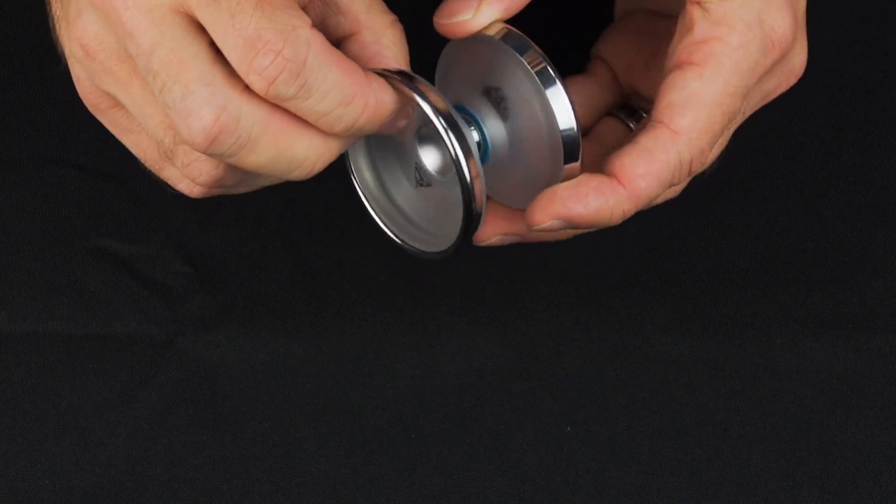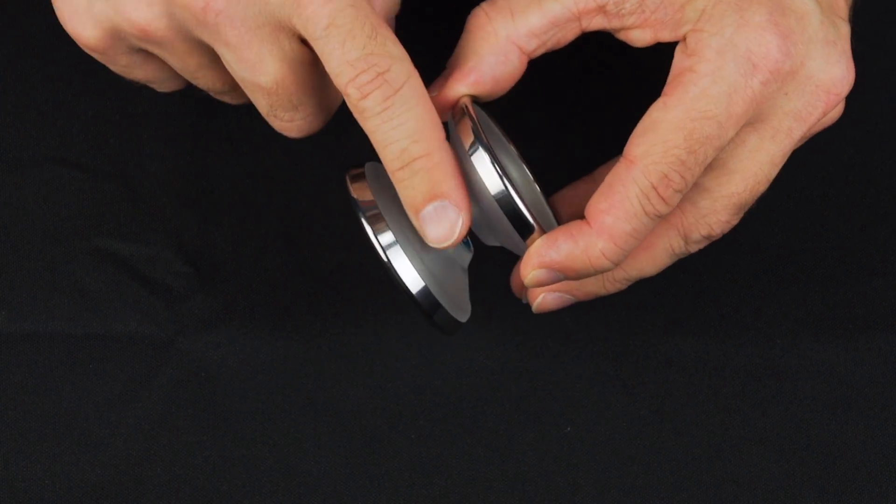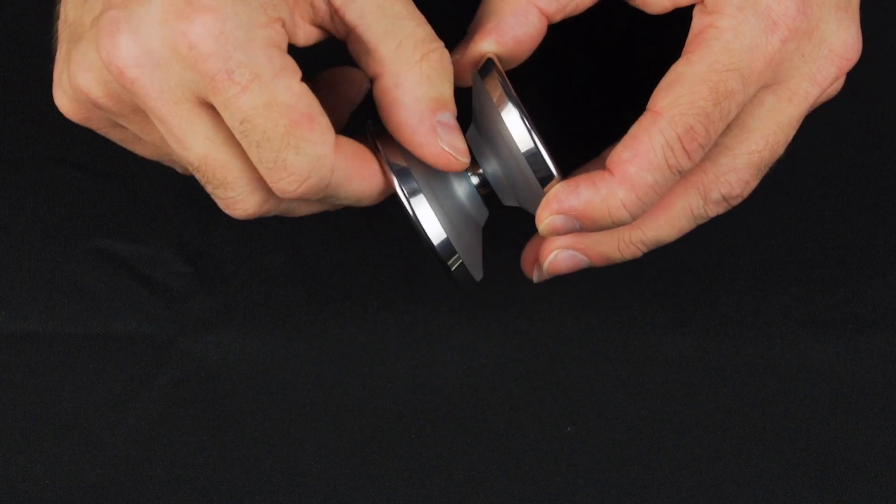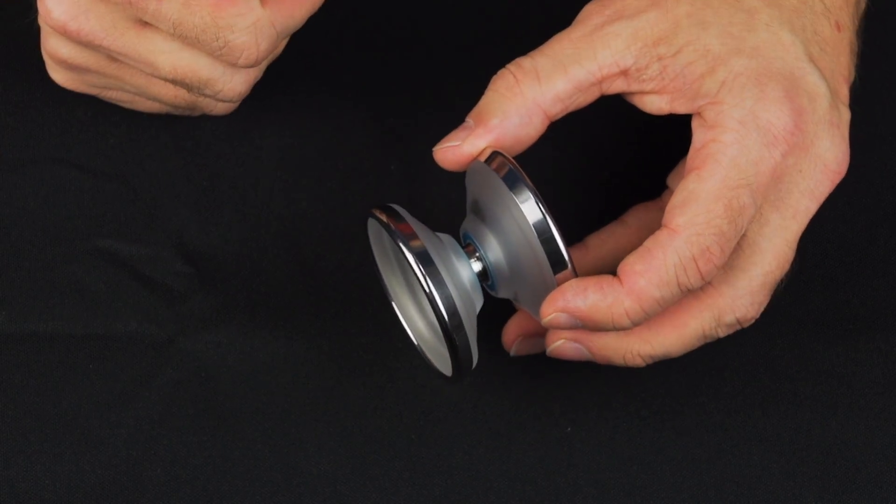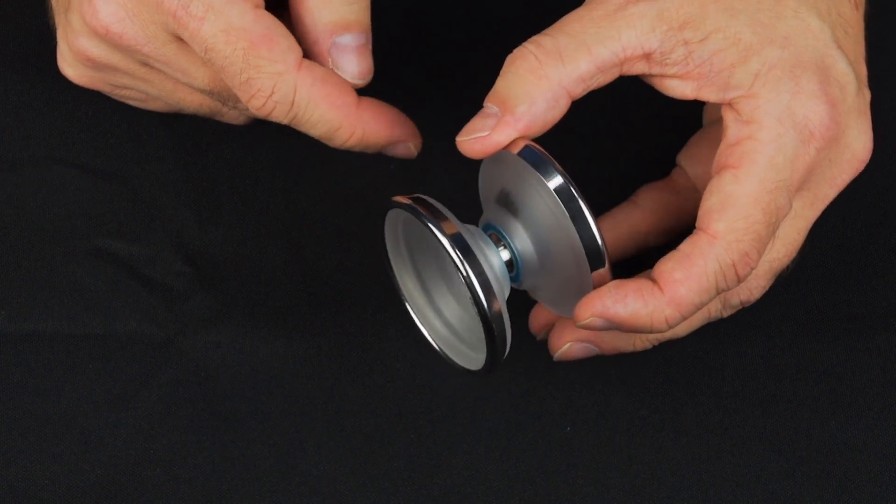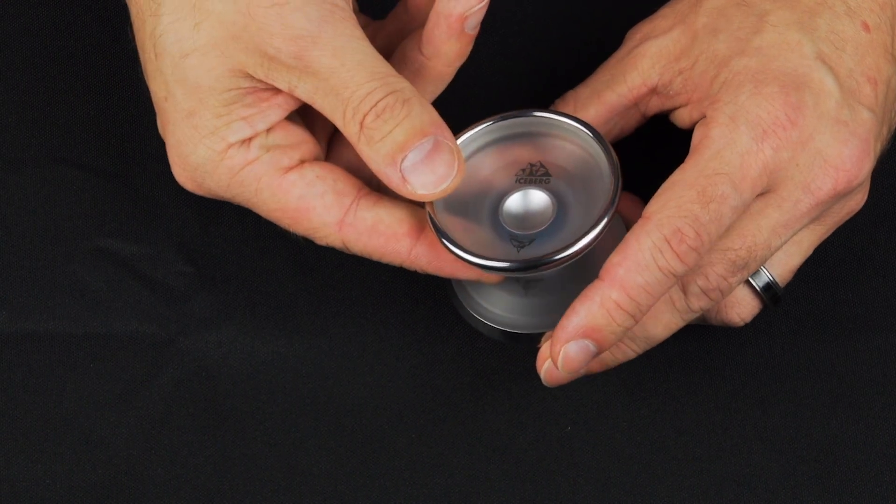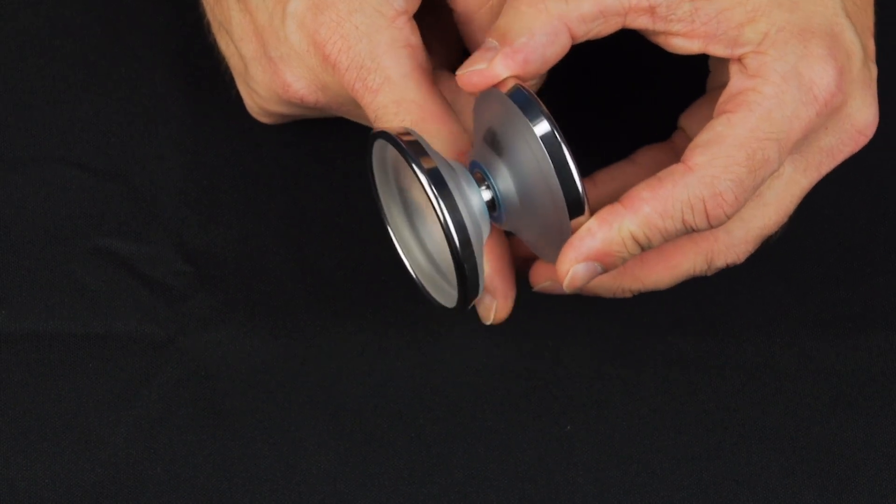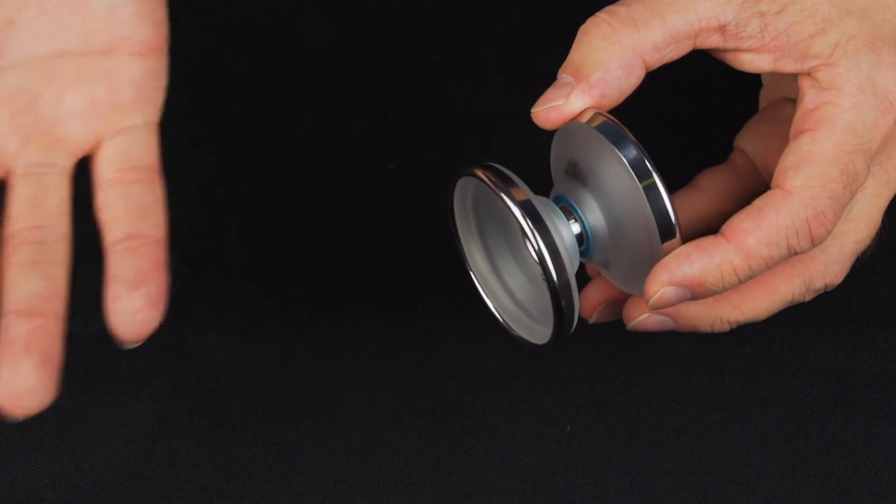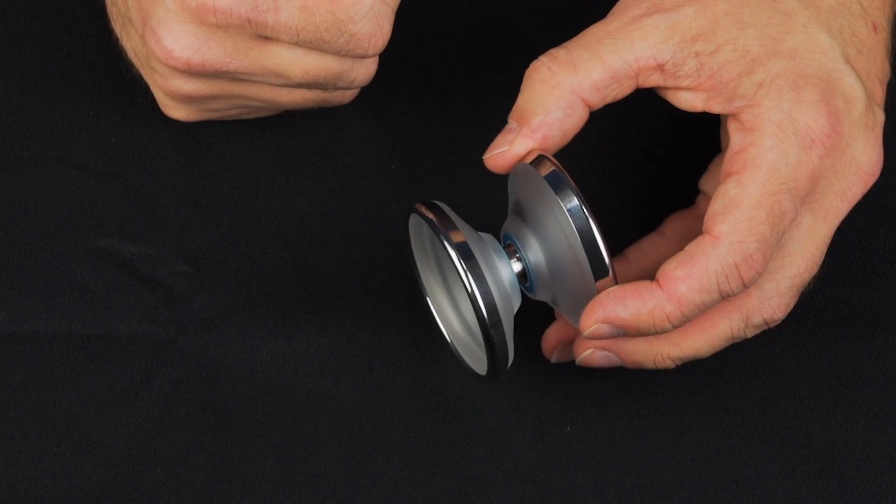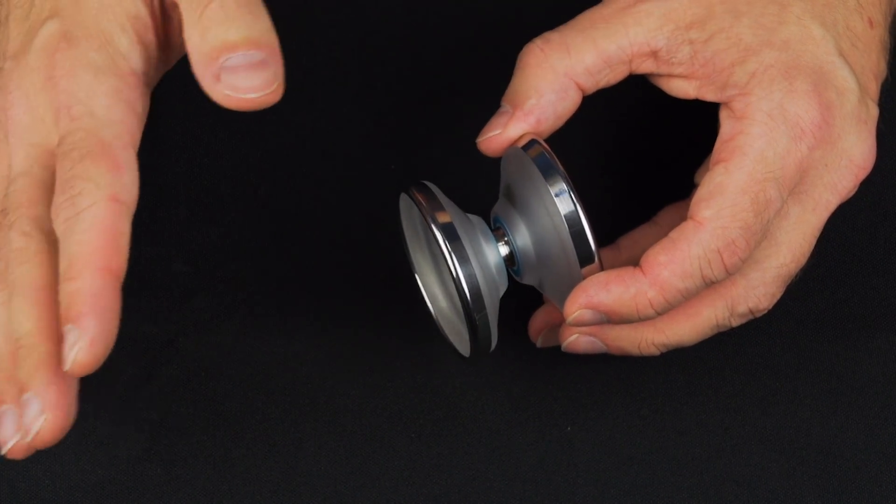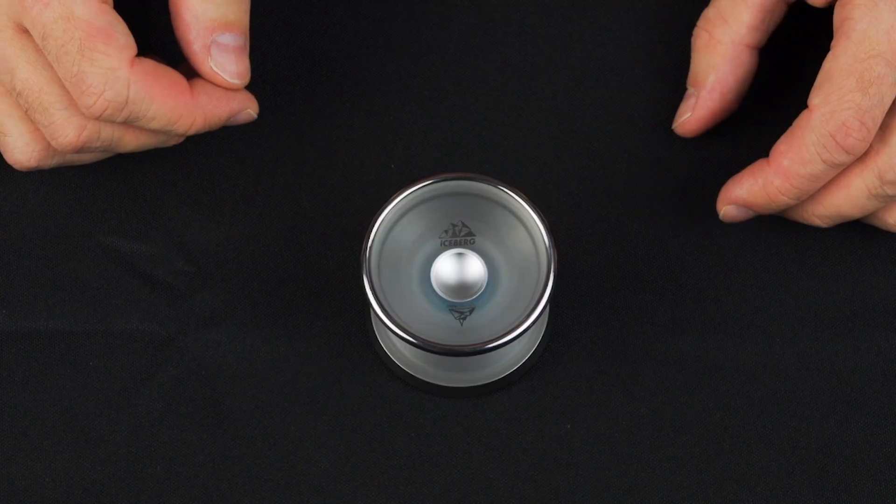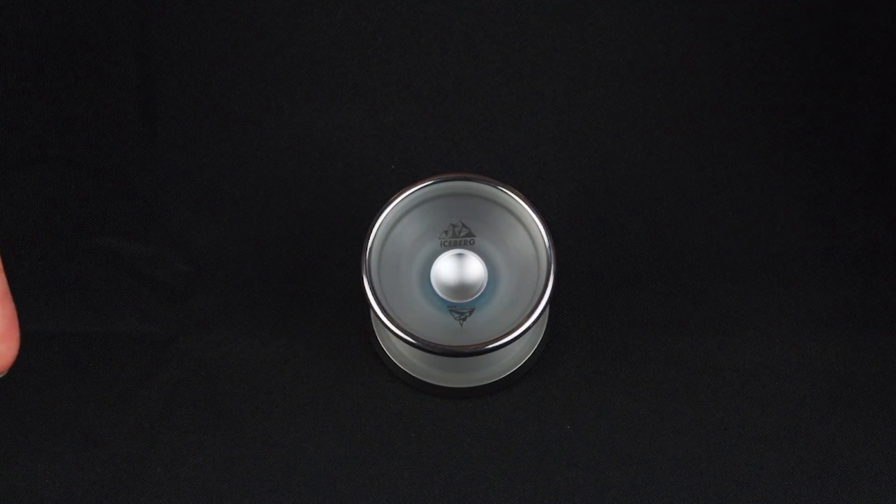The yoyo itself, they describe it as being frosted, it's similar to the texture of like bead blasting or something like that. What that means in practical terms is it's got this really nice look to it. On grinds it seems to grind, might even be just as long as aluminum yoyos. It feels super good when you're using it. It's just the whole package.